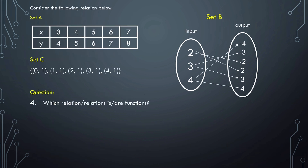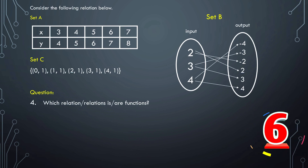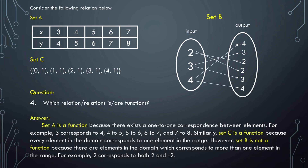Last question — which relation or relations is or are functions? Set A is a function because there exists a one-to-one correspondence between elements: 3 corresponds to 4, 4 to 5, 5 to 6, 6 to 7, and 7 to 8. Set C is also a function because every element in the domain corresponds to exactly one element in the range. However, Set B is not a function because there are elements in the domain that correspond to more than one element in the range — for example, 2 corresponds to both 2 and negative 2.